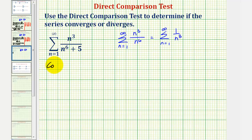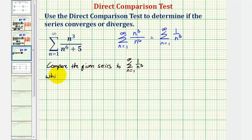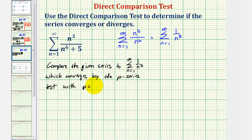Going back to our example, we'll compare the given series to the summation from n equals one to infinity of one divided by n to the third, which converges by the p-series test with p equals three, which is greater than one. We want to show the terms of the given series, n to the third divided by n to the sixth plus five, are less than or equal to the terms of the known converging series given by one divided by n cubed.